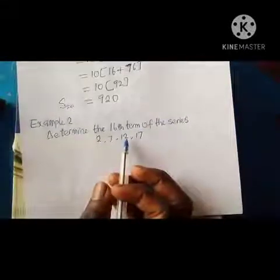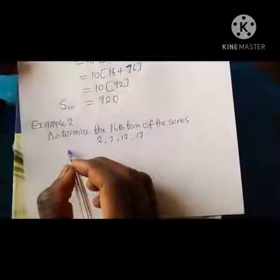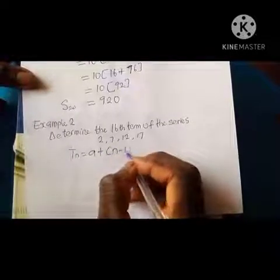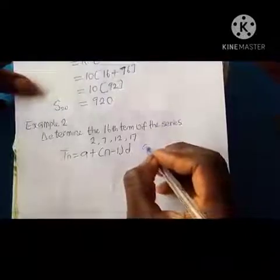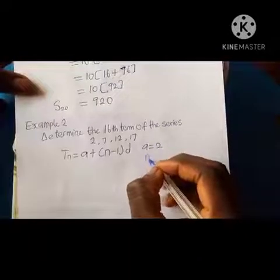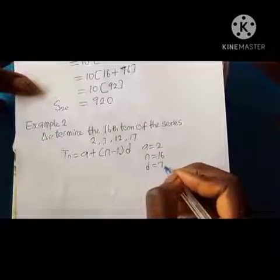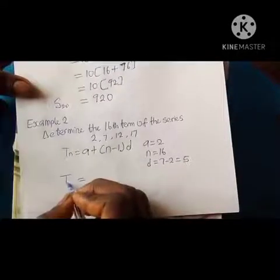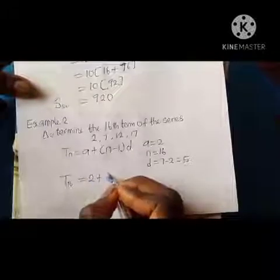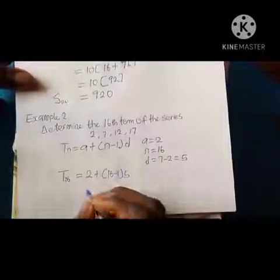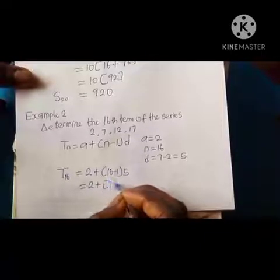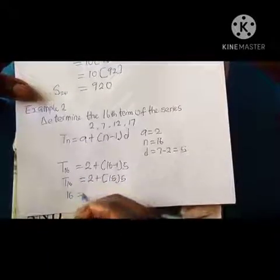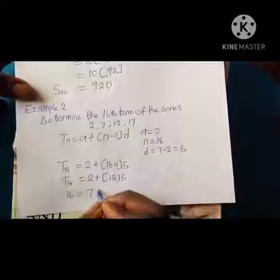Another example: determine the 16th term of the series 2, 7, 12... The nth term formula is T(n) = a + (n−1)d. Here a = 2, n = 16, and d = 7 − 2 = 5. So T(16) = 2 + (16−1)×5 = 2 + 15×5 = 2 + 75 = 77.